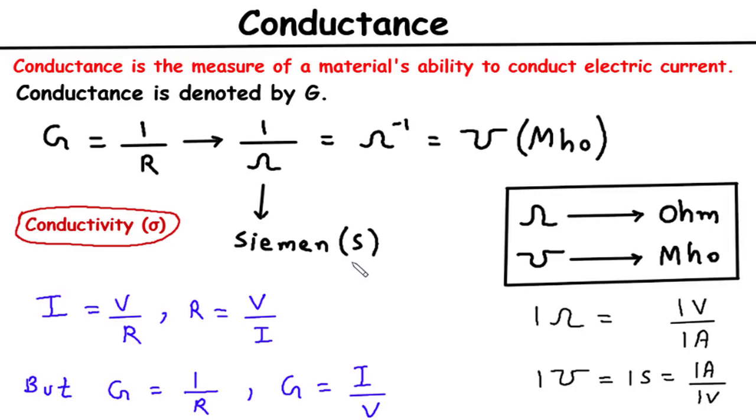To avoid any confusion, it's important to differentiate between conductance and conductivity. Conductivity is a property of the material, representing how easily it conducts electricity. It is a material-specific property that describes the ability of a substance to carry an electric current.